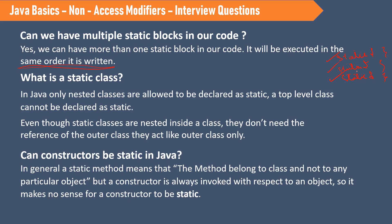What is a static class? Only nested classes can be static — nested classes are classes within another class. Top-level classes cannot be static. For example, class A can contain class B, and only class B (the nested class) can be static. These nested static classes can access the static variables of the outer class directly, but they cannot access the instance variables of the outer class.